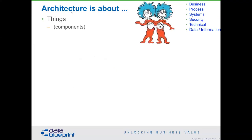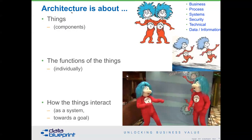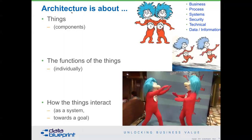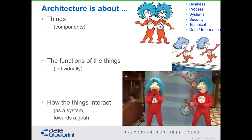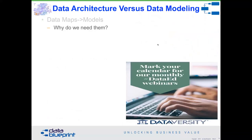What is architecture? A simple explanation is that architecture is about things, about what those things do, and how — when those things are doing their thing — they interact with each other. Probably not a great elevator pitch to help the boss understand what we're trying to do, which is to help our business process, system security, technical, data and information architectures be managed better all the way around. Key is that models are the things that bridge the difference between data maps and architecture. We'll talk about why we need them, how they're used, and what challenges organizations face in attempting to do better with these tools.